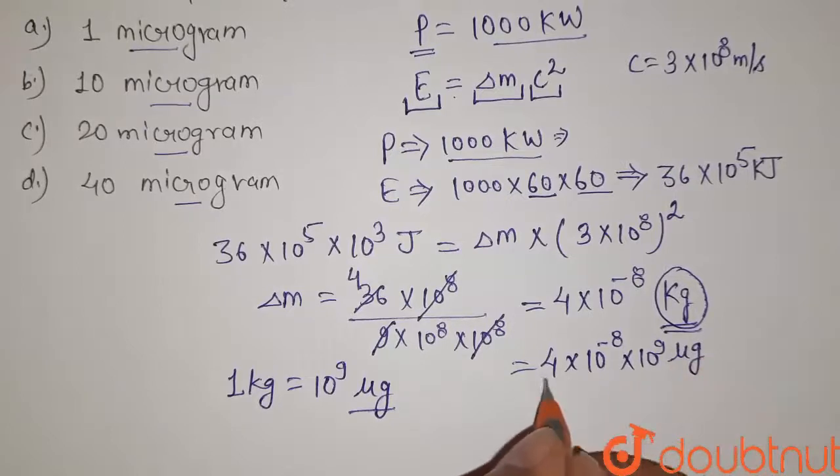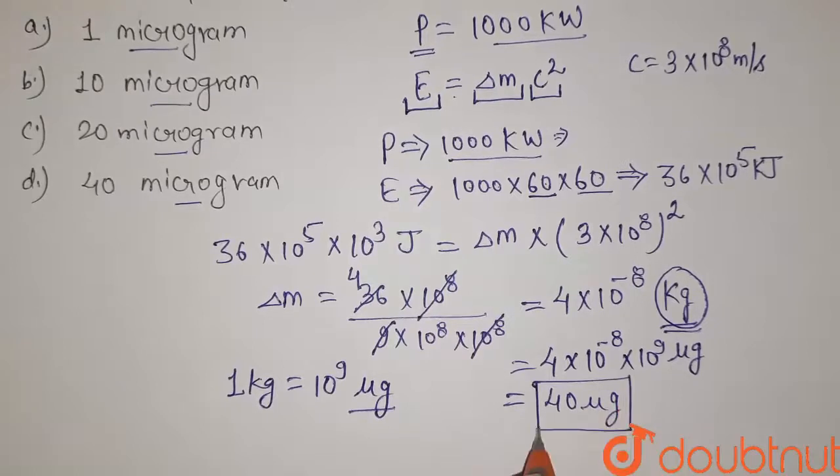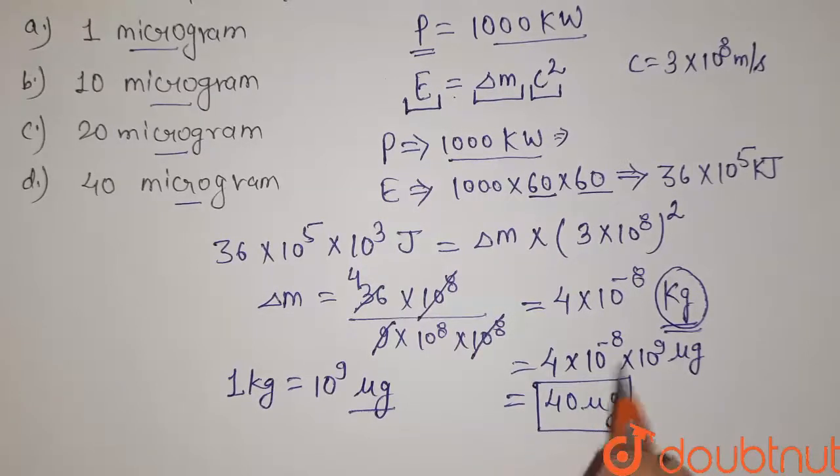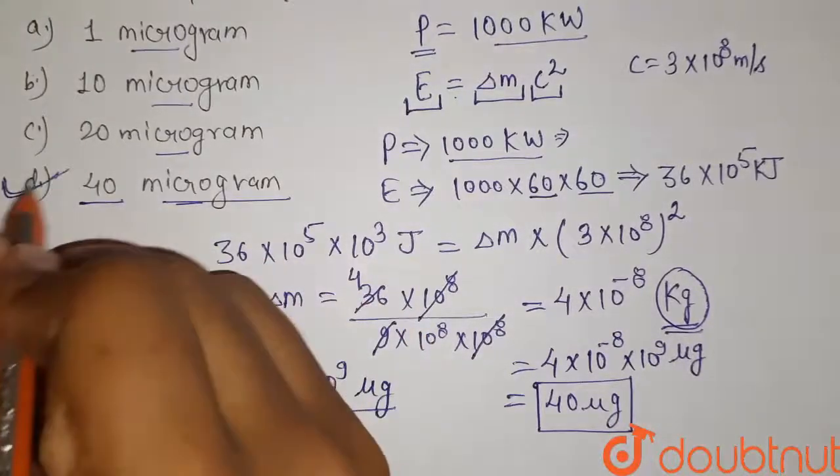So we will have 4 times 10 to the power minus 8 times 10 to the power 9 micrograms, and here it will equal 40 micrograms. So 40 micrograms will be our correct answer for this question. Option D is 40 micrograms, so it will be our answer. Thank you.